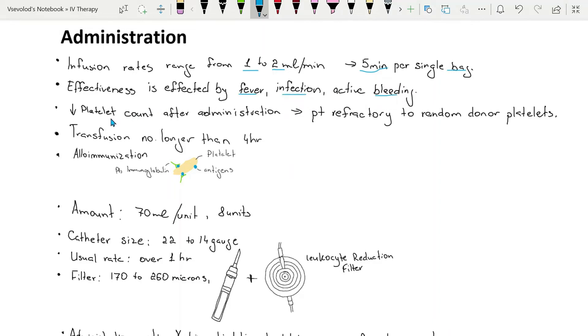To determine effectiveness, platelet count is checked one hour after transfusion. Poor platelet count recovery also indicates that the patient may be refractory to random donor platelets.